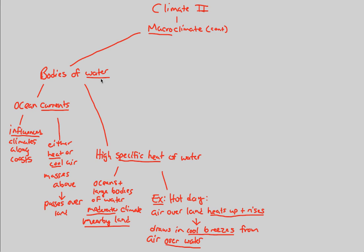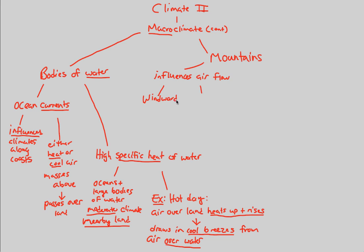Another major geological factor behind macroclimate is mountains. Mountains are a huge part of the geology of Earth, and we always want to go back to the idea of air — how is air influenced? Mountains directly influence airflow. Two main ideas behind mountains and their influence on airflow are based off of the two sides of the mountain: the windward side and the leeward side, each with different airflow characteristics.